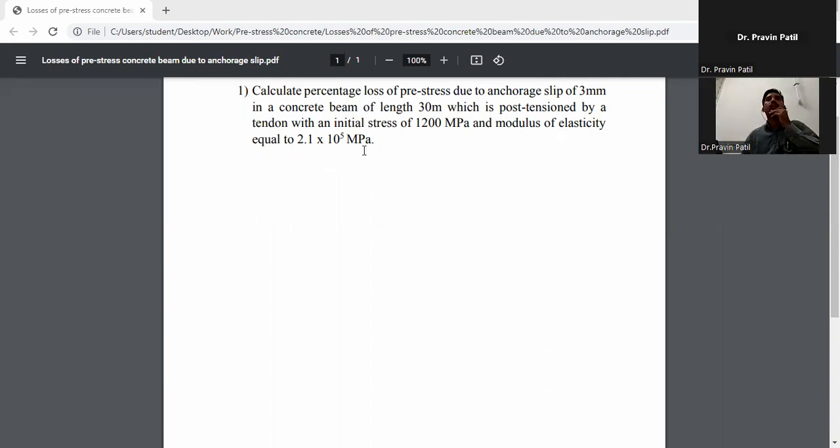So first of all, write down the given data. Delta is given as delta equals 3 mm, and span is given as L equals 30 meters.